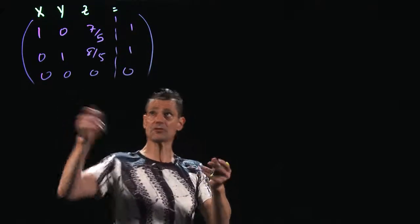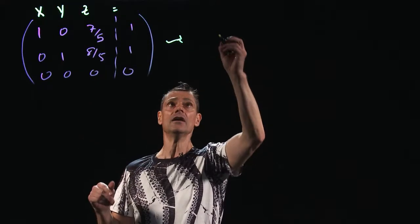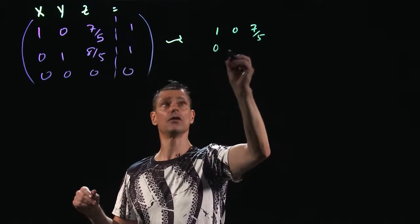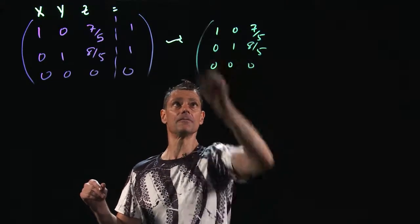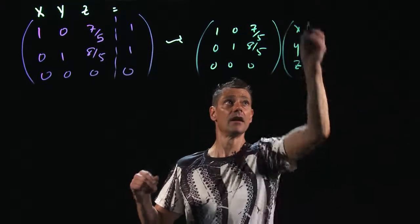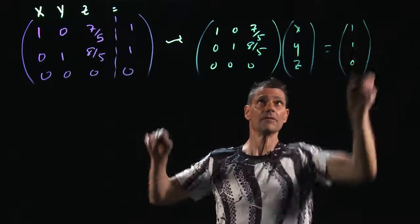This would code up matrix-wise like this. This is short for: 1, 0, 7 fifths; 0, 1, 8 fifths; and 0, 0, 0; times x, times y, times z is equal to 1, 1, 0. And of course...